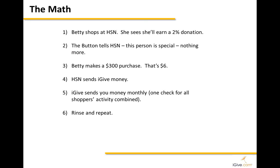Now let's talk about why it's her favorite cause. She can be supporting cause A, and somebody else in her household can be supporting cause B. When she goes to shop, she sees exactly what she's going to earn as a percentage. The store learns she is supporting a cause — it doesn't know which one — but the store knows this person is important, so sometimes it offers specials like free shipping or buy-one-get-one-free. Betty makes a purchase at HSN — that's 2%, so $6 on a $300 purchase. HSN sends us money, we send you money, and then you do it all over again.